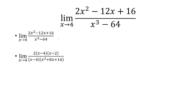In this one, I get 0 over 0, so let's factor this out. The top: I can factor out a 2 and get x squared minus 6x plus 8, and that factors into x minus 4 times x minus 2. The denominator is a difference of two cubes, which is x minus 4 times x squared plus 8x plus 16.